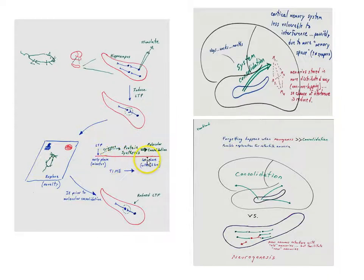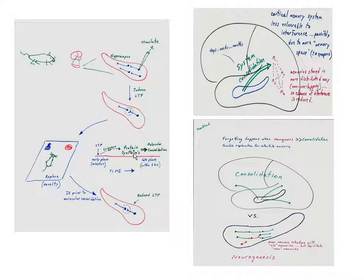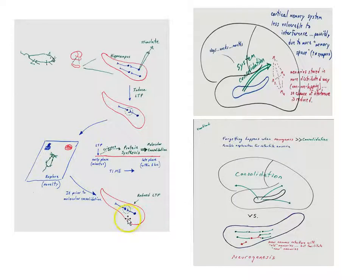LTP has an early phase and a late phase. The late phase takes about six hours to be established — we'll call that molecular consolidation — and it requires protein synthesis. Proteins have to be made by the cells and sent out to the recently active synapses to strengthen those connections, and that takes around six hours. If the new learning happens within that time frame, it can interfere with this late phase of LTP. If the new learning happens after six hours, you've given those synapses time to do molecular consolidation and they become less vulnerable to new learning.